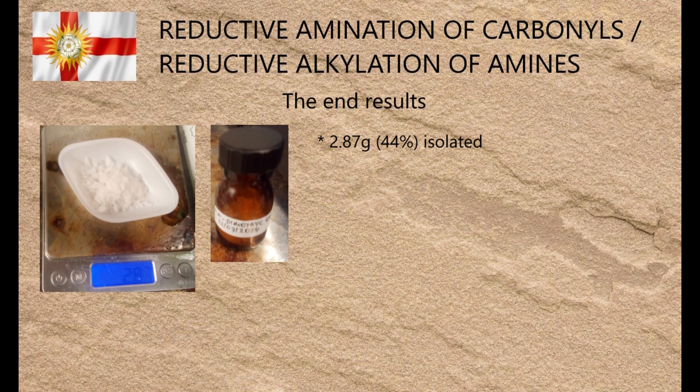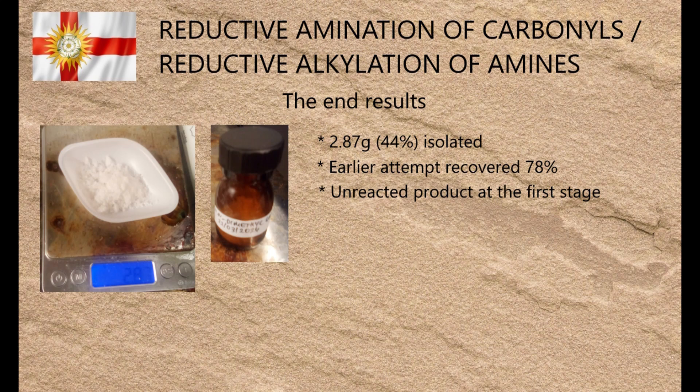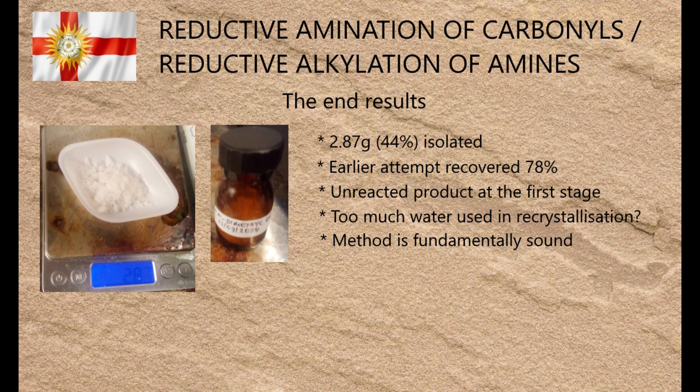The final yield was 2.87g, which was 44% with respect to GABA — not at all impressive given that I got 78% when I tried it at a smaller scale. I've since identified the most likely causes for the lower yield: adding borohydride too quickly at the first step, which caused big lumps of insoluble product to form; not waiting for said lumps to dissolve in acid before adding the second portion of formaldehyde; and as a knock-on effect, using too much water during recrystallisation due to soluble material still being present, fooling me into thinking there was more undissolved product than there actually was. Still, it's a useful learning point for next time.